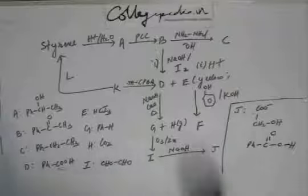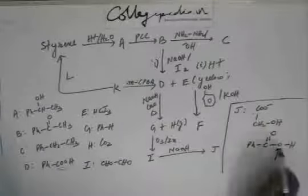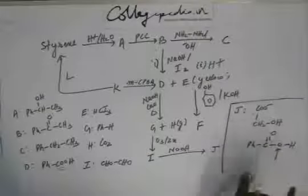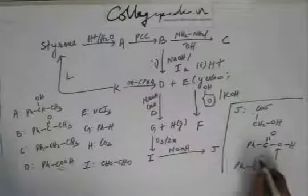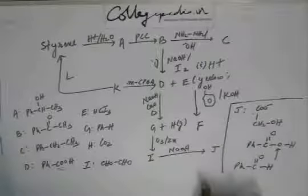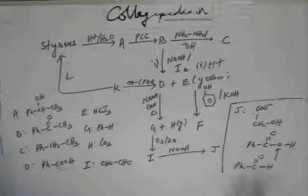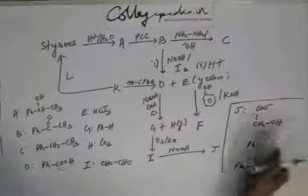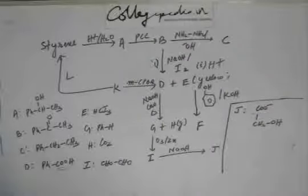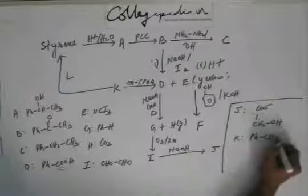Look, what happens in Baeyer-Villiger reaction? What does MCPBA do is it inserts oxygen. Here we see oxygen. So this oxygen must be inserted. So prior to insertion, how should be the carbonyl group? This is the carbonyl compound. So when you insert oxygen, it becomes this. So what should be K? K should be this, benzaldehyde. No trouble? No trouble. So K is benzaldehyde.